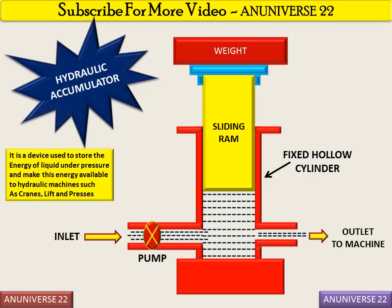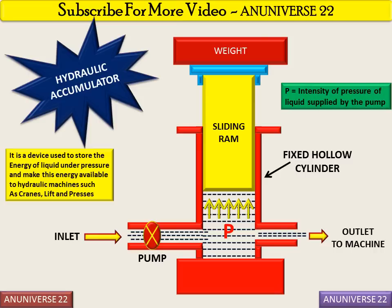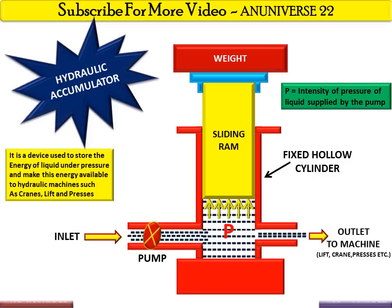This is the fluid. The ram is capable of sliding up and down in the cylinder. P is the intensity of the pressure of the liquid that is supplied by the pump.